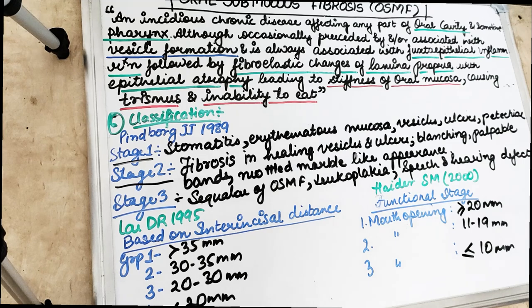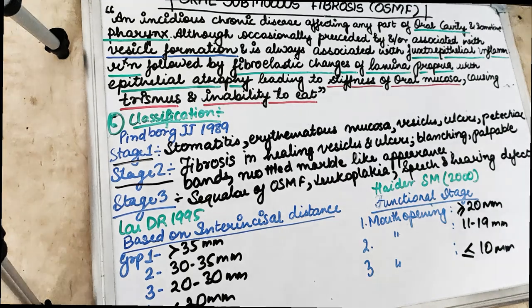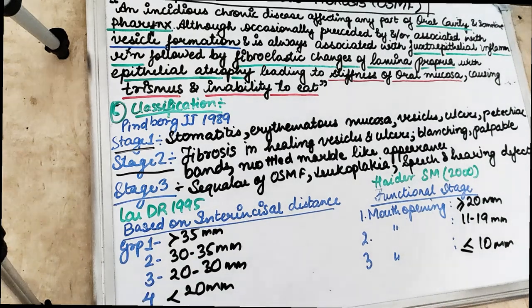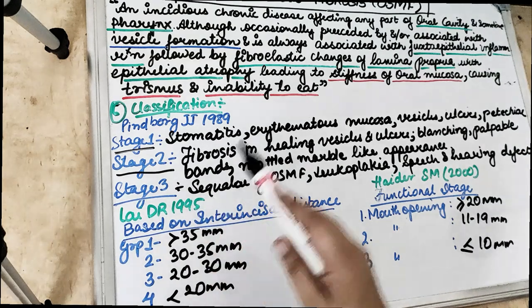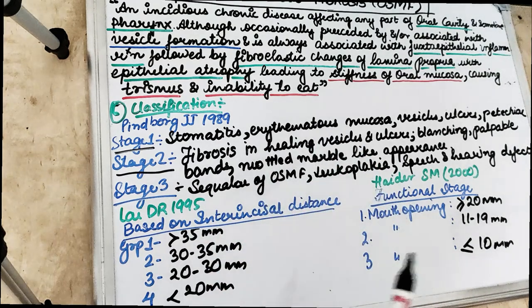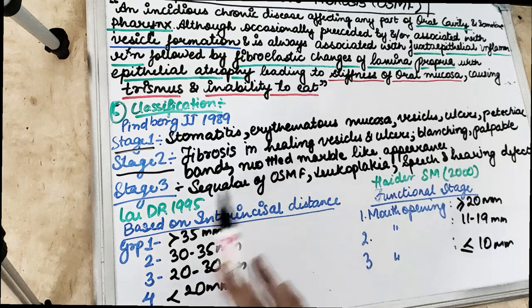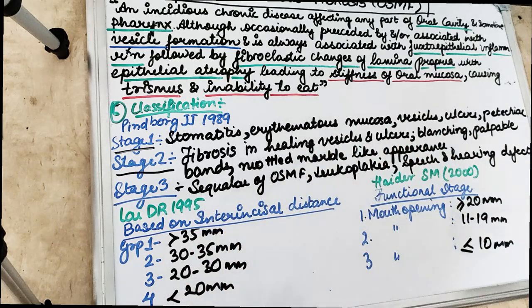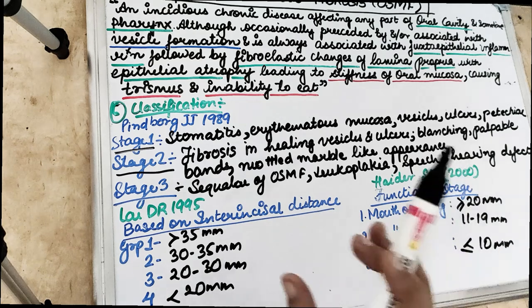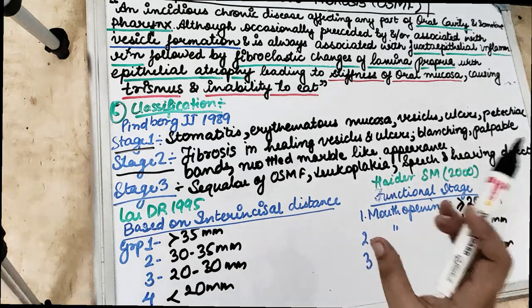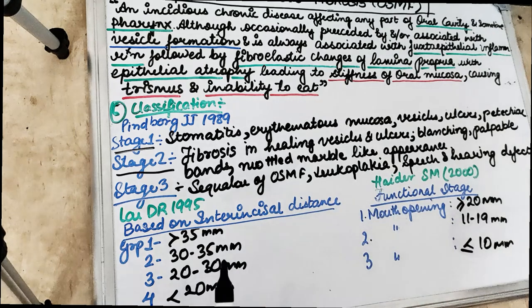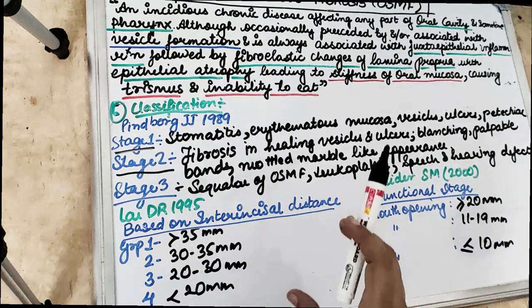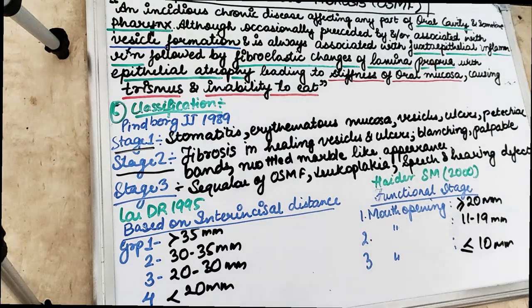We have many classifications for OSMF. Based on clinical findings, according to Pindborg, we have Stage 1: stomatitis, erythematous mucosa, vesicles, ulcers, and petechiae. Stage 2: fibrosis in healing vesicles and ulcers, blanching of the mucosa, palpable bands, and mottled marble-like appearance. Stage 3 is the sequel of OSMF — leukoplakia and speech and hearing defects.